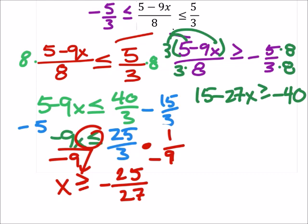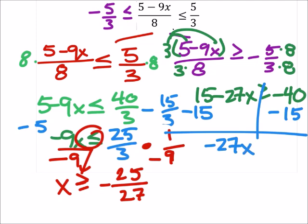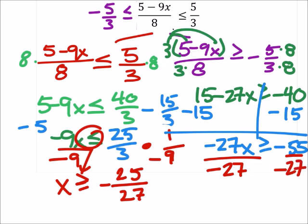Now, if I can do this right this time, I would subtract 15 from both sides, giving me negative 27x is greater than or equal to negative 55. And when I divide both sides by negative 27, that again is going to flip the inequality comparing to x. That just gives us a positive 55/27.